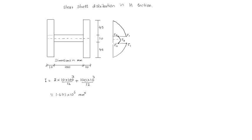To find tau1, we shear the top area — I mean, above the horizontal member, we take that area. What is Q1? Q1 equals 10 into 45, and like that two members are there, so central distance is 5 plus 45 by 2. That is, Q1 equals 10 into 45 into 2 into (5 plus 45 by 2). Q1 is 24,750.